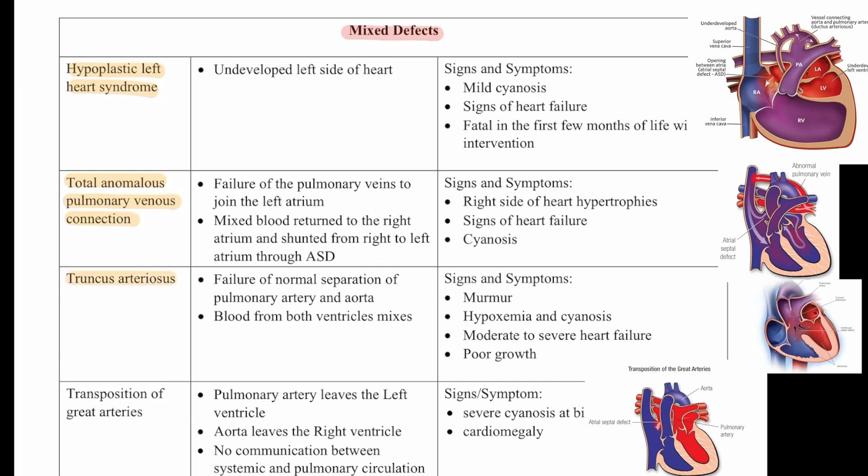Then we have truncus arteriosus. This is failure of normal separation of the pulmonary artery and the aorta — blood from both ventricles mixes. Signs and symptoms are a murmur, hypoxemia, cyanosis, moderate to severe heart failure, and poor growth.